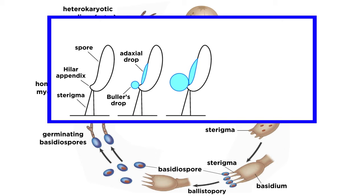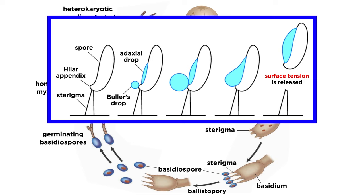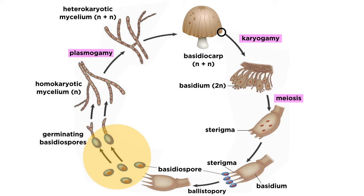The Buller's drop expands until it touches the adaxial drop, and the two fluid droplets fuse into one larger drop. At this moment, surface tension is released, and the spore is propelled off the sterigma into the environment. Hopefully that spore will find a suitable location to germinate, and the cycle will repeat.